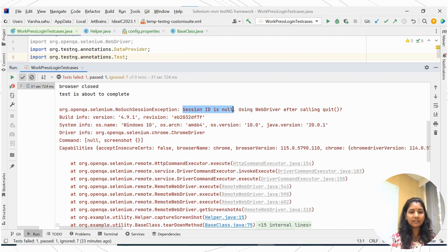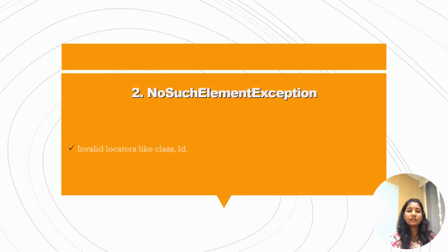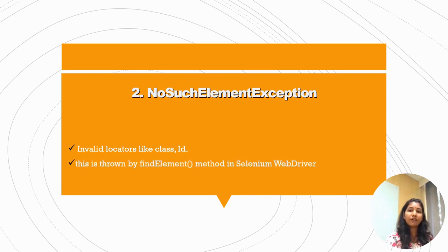This exception looks like 'NoSuchSessionException' or 'session ID is null using WebDriver after calling quit.' Moving to the next one — NoSuchElementException. This occurs due to an invalid locator, such as an incorrect class, ID, name, or tag name when you are trying to find web elements on the page. This exception is thrown by the findElement method in Selenium WebDriver.